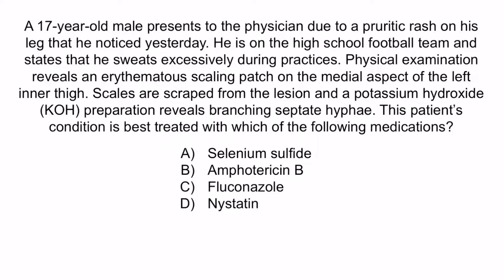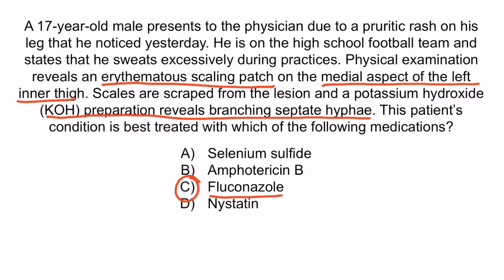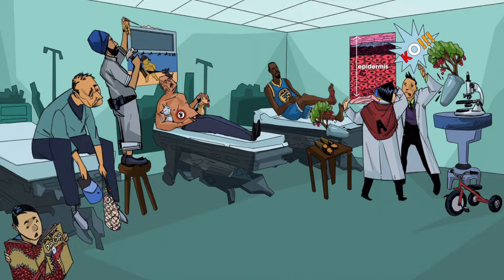This patient has tinea cruris, or jock itch. There are two key points: first, he has an erythematous scaling patch on the medial aspect of the left inner thigh — the classic location and description of jock itch. Second, the pathological finding of branching septate hyphae from a KOH prep confirms a dermatophyte infection. Together, these findings are consistent with tinea cruris, and the correct answer is C, fluconazole. From the image, recall that the girl getting her swimsuit ripped apart by the dog represents tinea cruris affecting the inguinal area, and the shawl with the letter A reminds us that most dermatophyte infections can be treated with topical azoles.